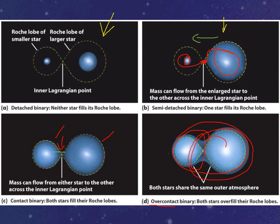For a contact binary, mass can actually go back and forth. So that means that one star can get smaller, the other star can get bigger, and it can go back and forth either way.